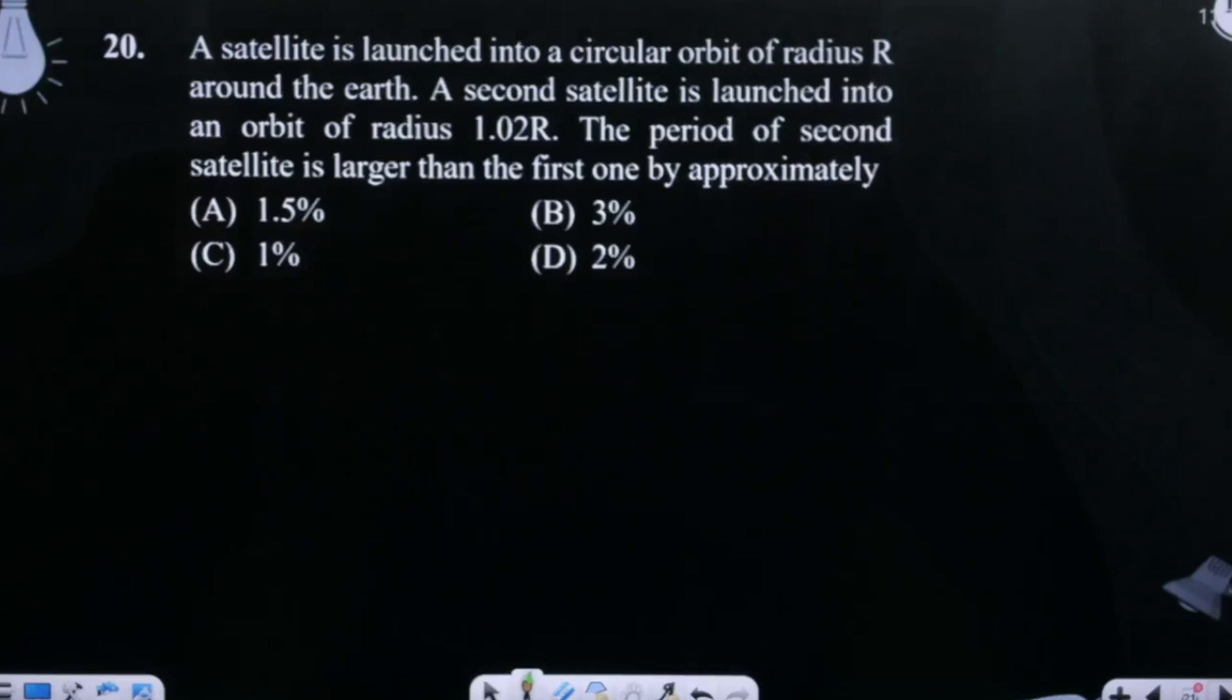A satellite is launched into circular orbit of radius R about the earth. A second satellite is launched in an orbit of radius 1.02R. The radius difference is 0.02R. The period of second satellite is larger than first by approximately...